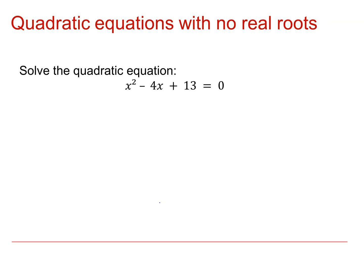Now look at this one. Pause the video and try to solve it by completing the square. OK, we start the same as we did before. x minus 2 all squared. That gives us a plus 4 so we take that off. But this time we add 13.